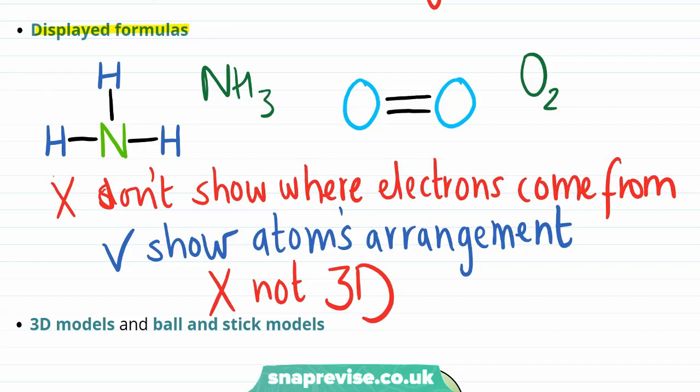In a displayed formula, we simply draw a line wherever there's a covalent bond formed. And for a double bond, we just illustrate this with two lines, as shown here for this molecule of oxygen.